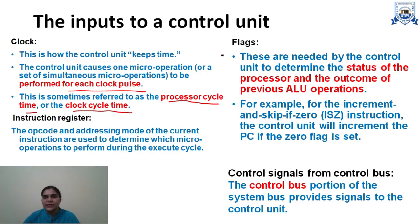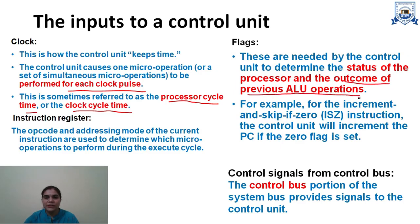Flags are condition flags or status flags. These include sign flag, carry flag, zero flag, overflow flag, interrupt flag, etc. These flags are used by the control unit to determine the status of the processor and the outcome of previous ALU operations. For example, with an increment-and-skip-if-zero instruction, the control unit will increment the program counter if the zero flag is set.